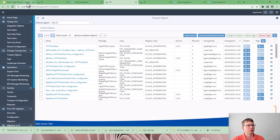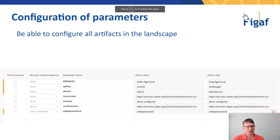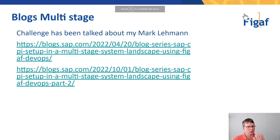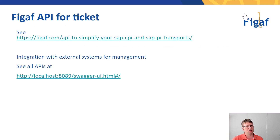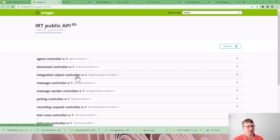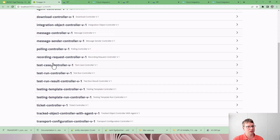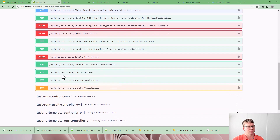That covers the landscape overview, transport process, and parameters. We do have more to talk about regarding multi-stage landscapes — there's a good blog post by Mike Leeman talking about how to use the tool to handle multiple scenarios. We talked about webhooks — you can set them up to send messages each time something changes. There is also a good API that allows external systems to invoke the figaf tool, and you can easily go in and see all the different APIs available to handle these scenarios.